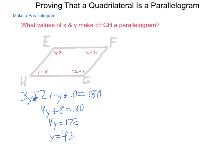If Y is 43, then angle H here is 53 degrees, and angle E is going to be its supplement, 127 degrees.